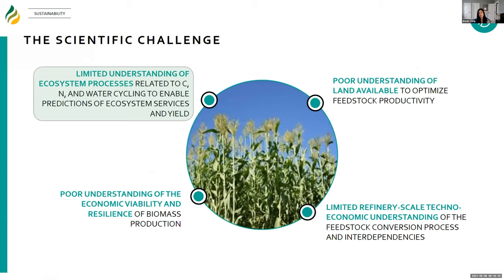Within the sustainability theme, we're tackling several major scientific challenges. My group is involved with the limited understanding of ecosystem processes related to carbon, nitrogen, and water cycling to enable predictions of ecosystem services and yield. While the title of my talk was very broad in terms of plant-microbe interactions in relation to sustainability, my talk will really focus on nitrogen cycling, though my group also does work on carbon cycling.